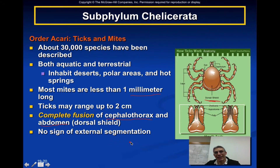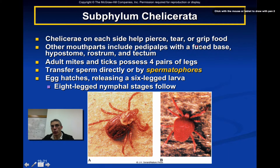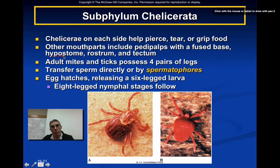There is no sign of external segmentation in these animals. The chelicerae help the animal to pierce, tear, or grip food. Mites and ticks are often considered temporary parasites, spending a brief period on their host and sucking fluid from their prey. The mouthparts also include pedipalps with a fused base, along with a hypostome, a rostrum, and a tectum — additional parts not seen in spiders or scorpions.